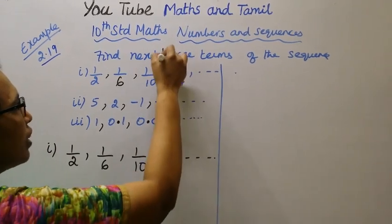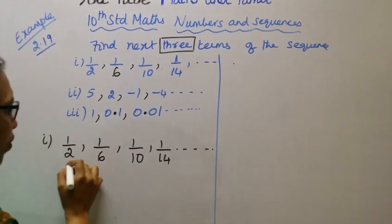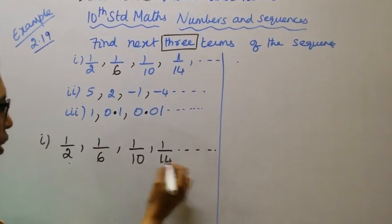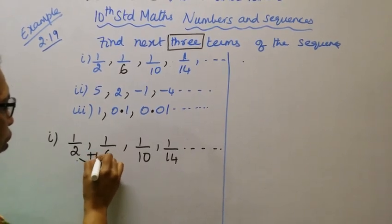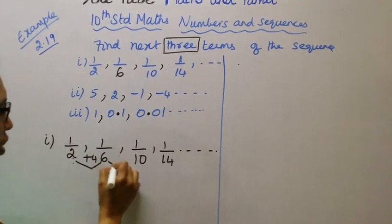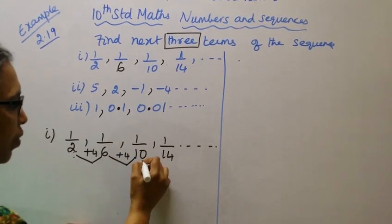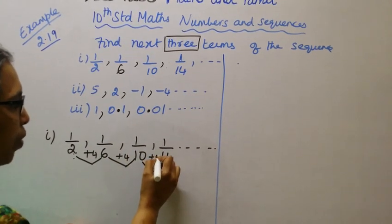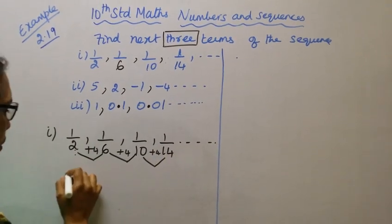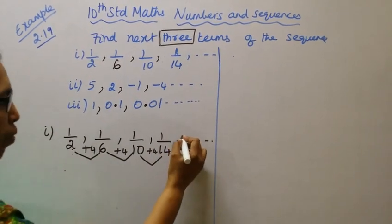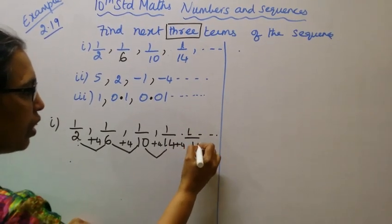That's how we get the next 3 terms. Easy. The denominator pattern: 2 plus 4 is 6, 6 plus 4 is 10, 10 plus 4 gives 1/14. Next in the sequence: plus 4 gives 18.